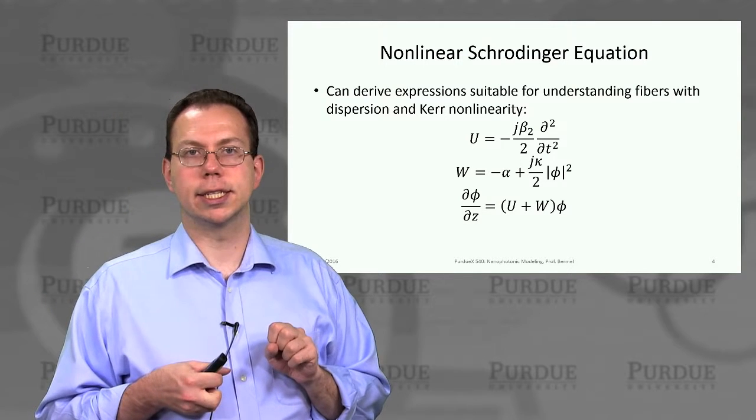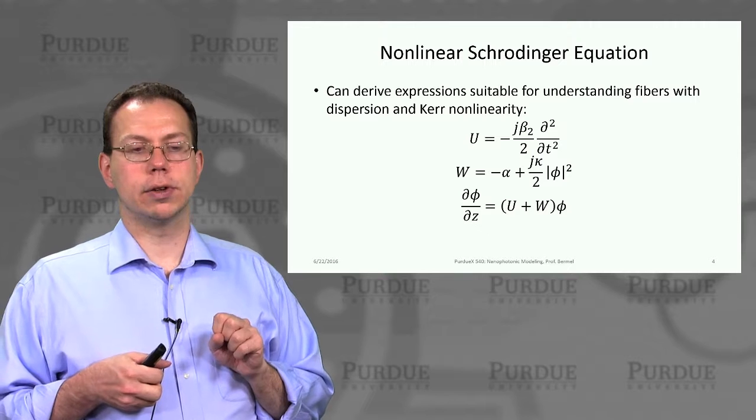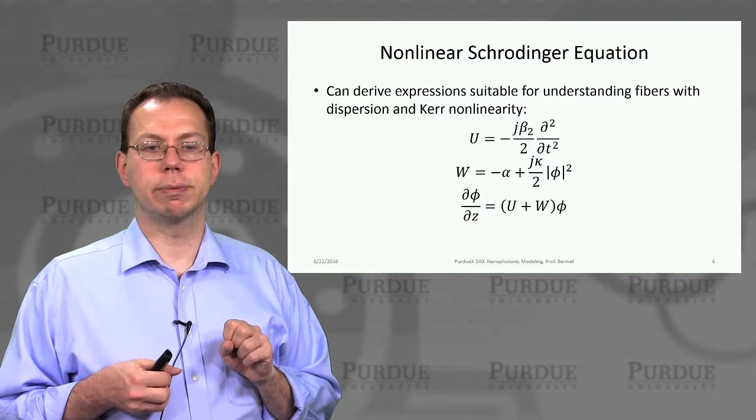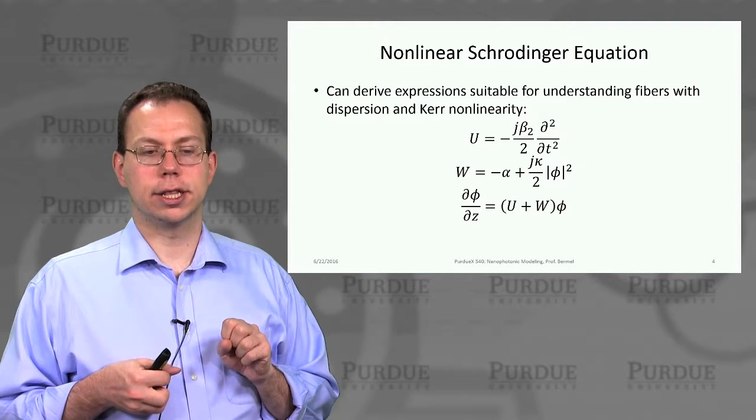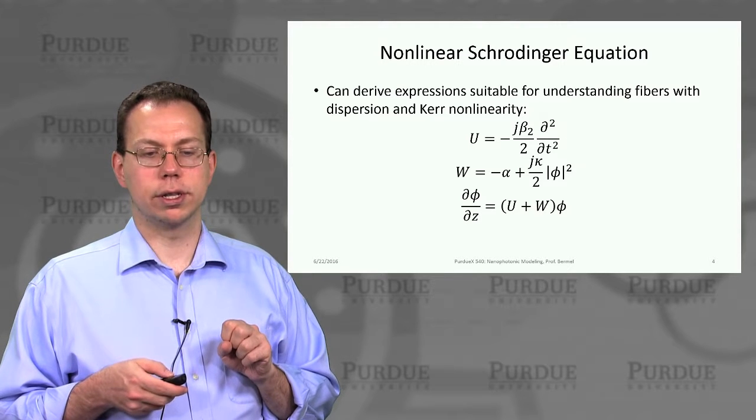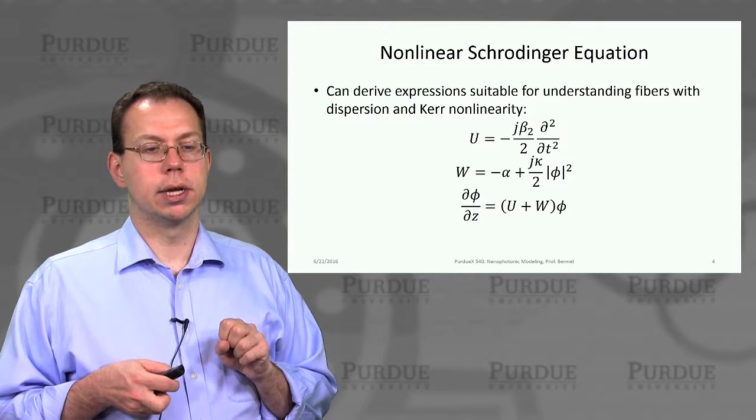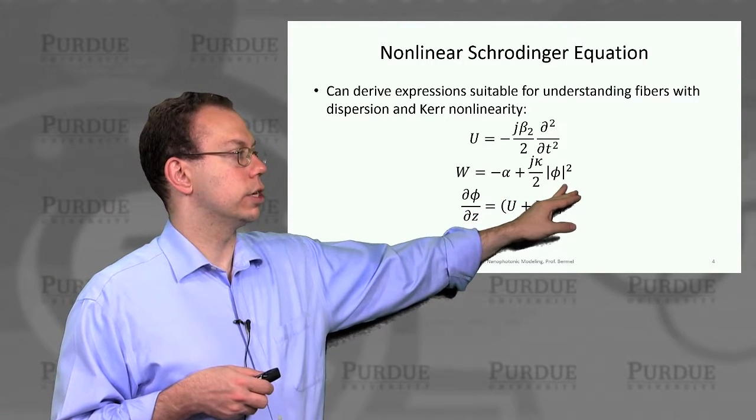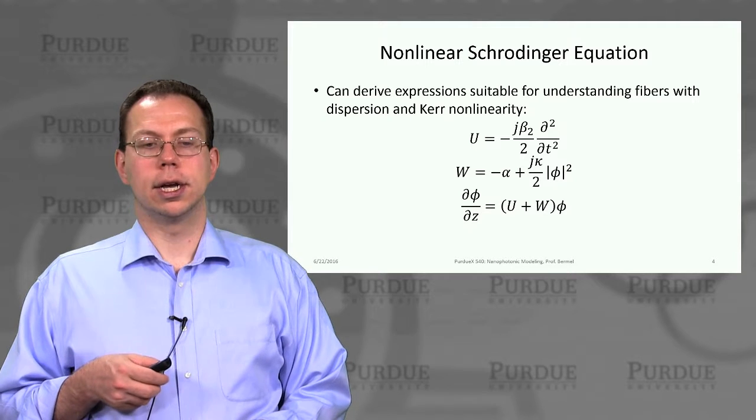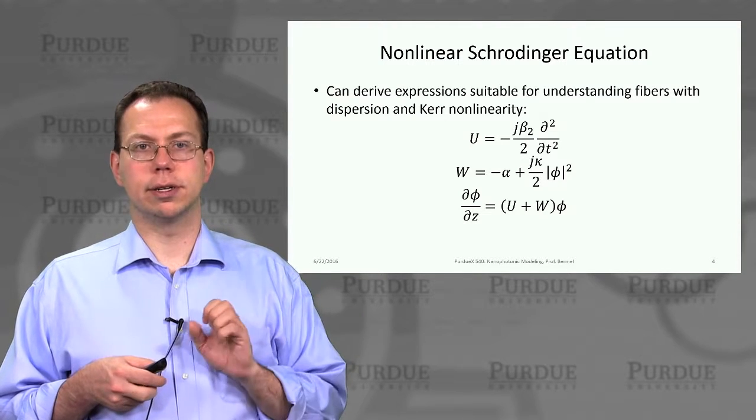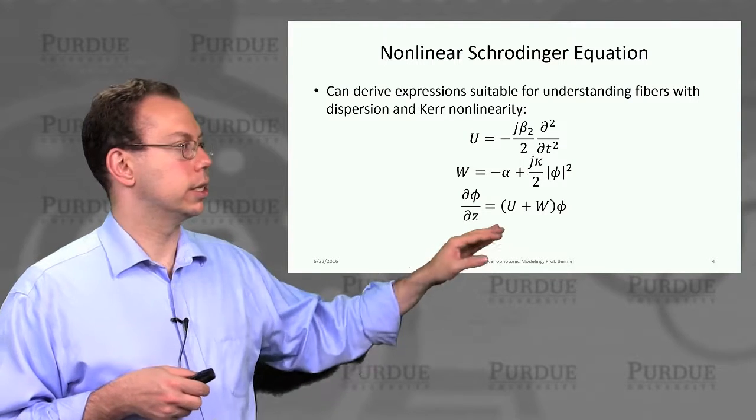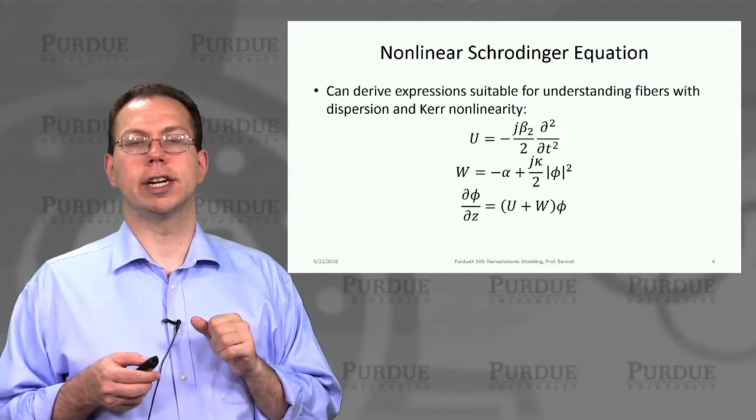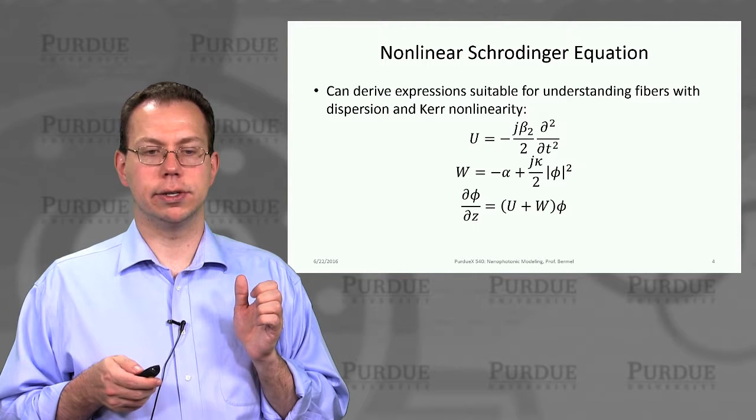This doesn't mean it's not interesting or powerful. Not only can you use this to describe propagating down ordinary fiber, but you can also use it to understand Kerr nonlinearities. You can substitute for the transverse mode a second derivative in time to capture dispersion. You can also substitute a phi squared term representing intensity, which would be like a Kerr nonlinearity going back to the previous unit. The functional form is exactly the same. Even though it looks simple, you can add a lot of interesting physics using this approach.